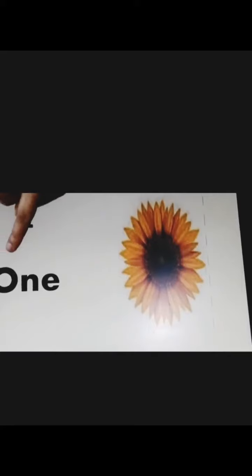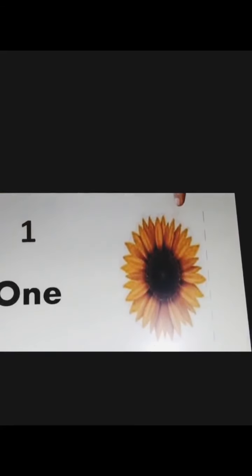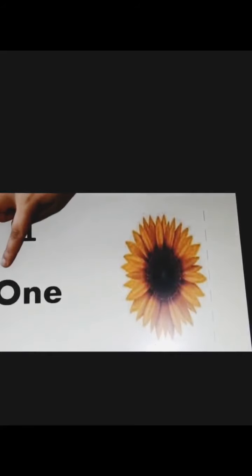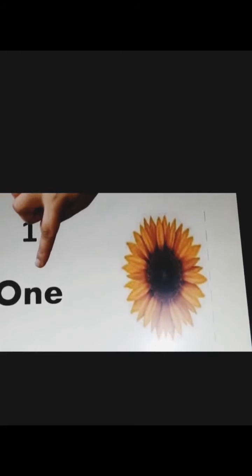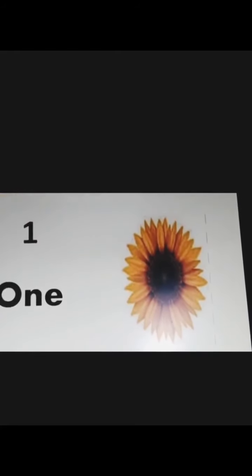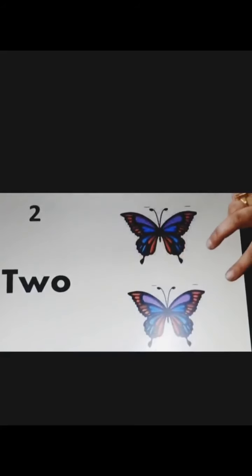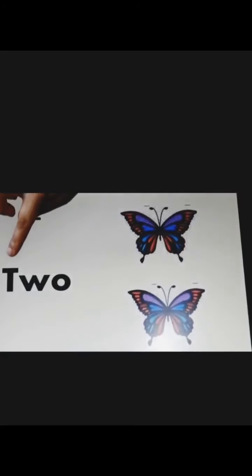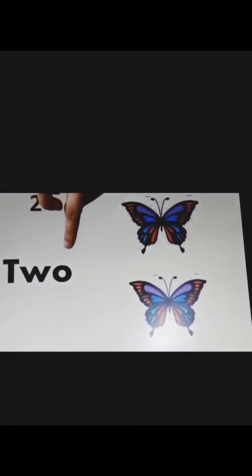1 O N E, 1 flower. Let's repeat. 1 O N E 1. 2, 2 butterflies, T W O.